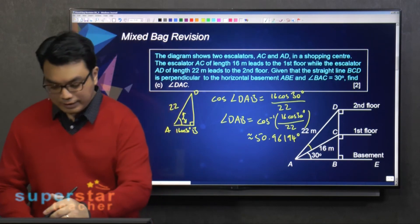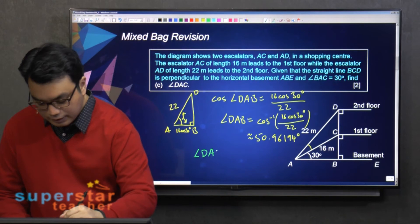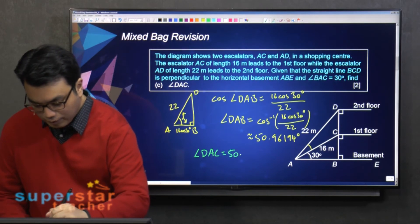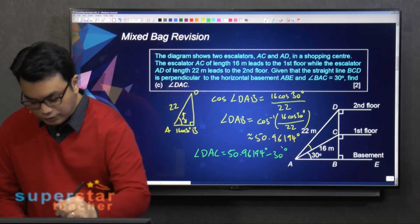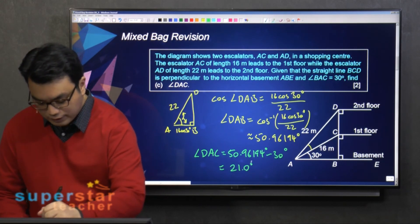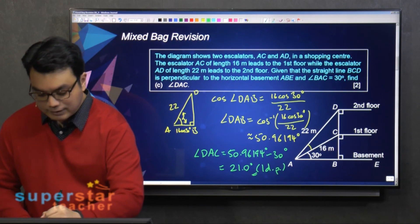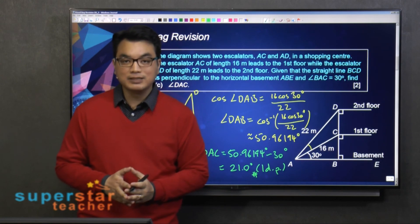Alright, and now we can find angle DAC. So it's 50.96194 minus 30 degrees. And this would be 21.0 degrees, rounded off to 1 decimal place. Okay? So take note for angles, always round off to 1 decimal place.